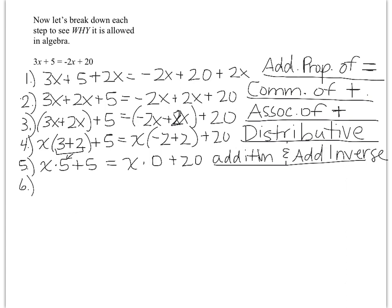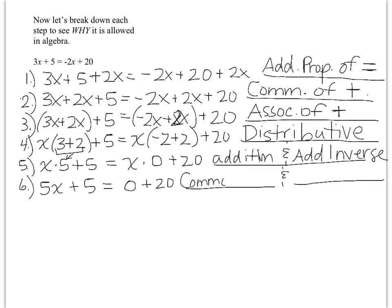Step six: 5x plus 5 equals 0 plus 20. There are two properties going on here. On the left-hand side, I changed x times 5 to 5x — I changed the order of multiplication. That is the commutative property of multiplication. And on the other side, x times 0 equals 0. Whenever you multiply by 0, that's the multiplication property of 0.